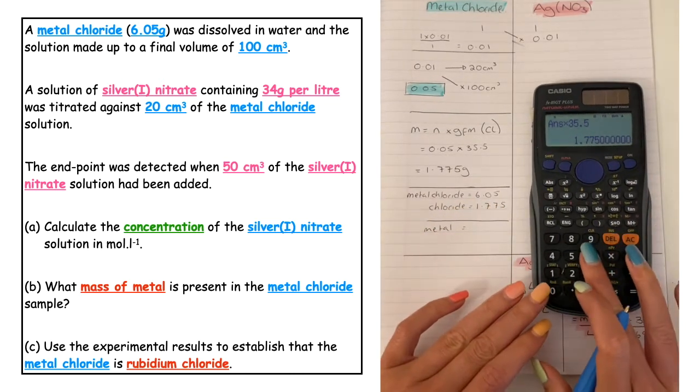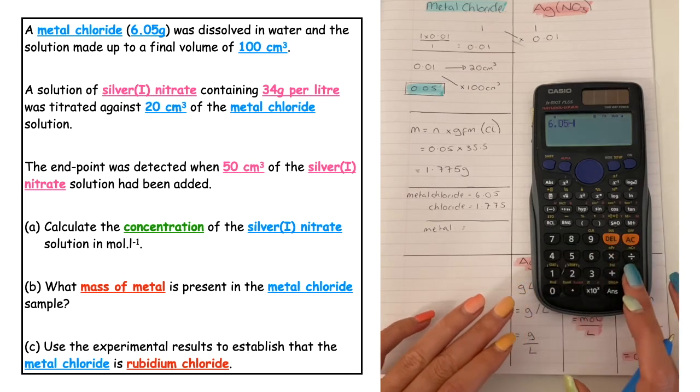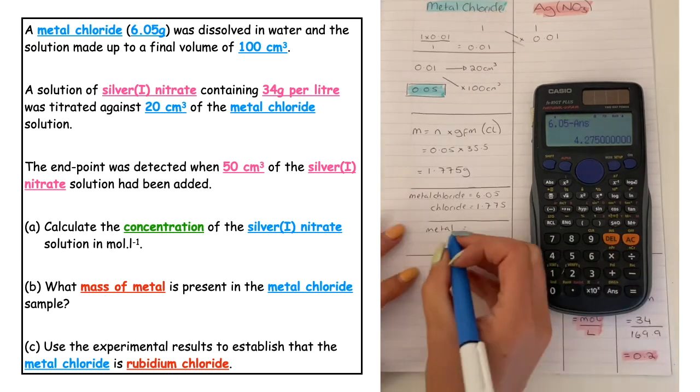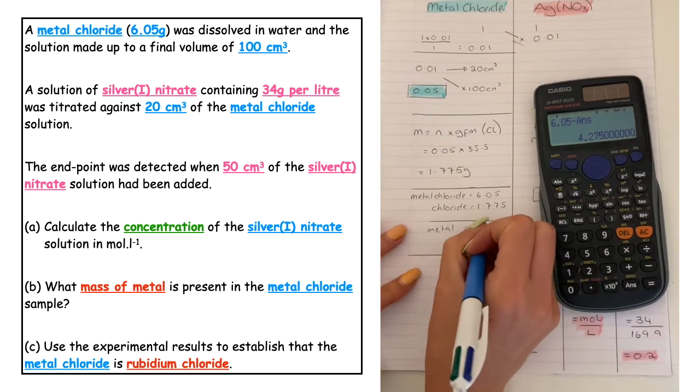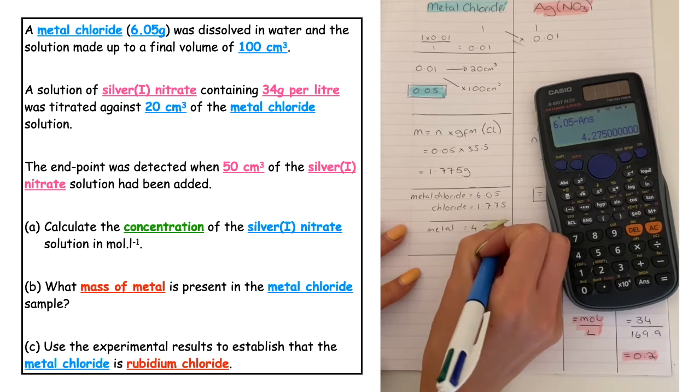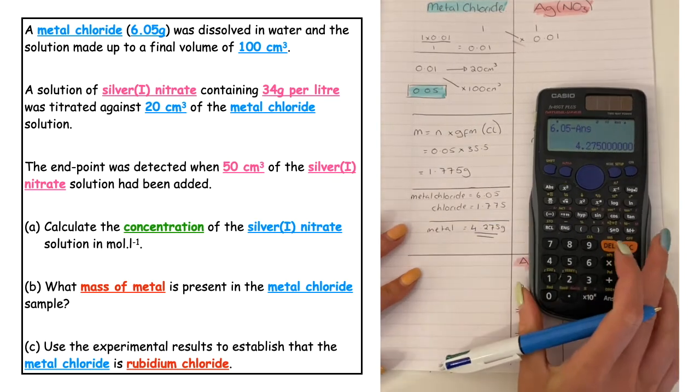So I'll do 6.05 minus answer and that comes in for a mass of 4.275 grams of my metal.